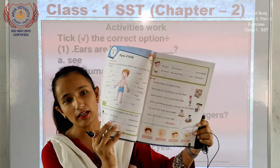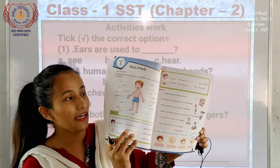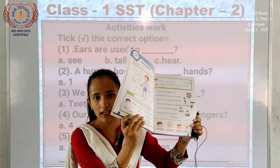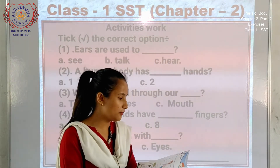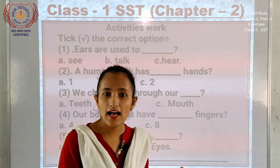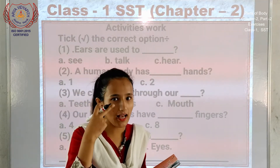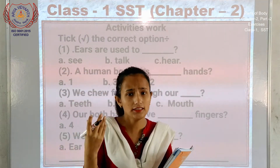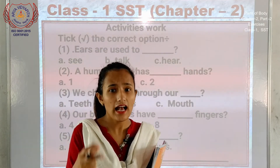Dekhen, ye hai aap loko ka parts of body jo diya hai, chapter 2, page number 8 mein hai. Parts of body mein kya kya aata hai — aap loko ko maine bola tha previous class mein: eyes, nose, ears — ye sab hum loko ka parts of body hai.